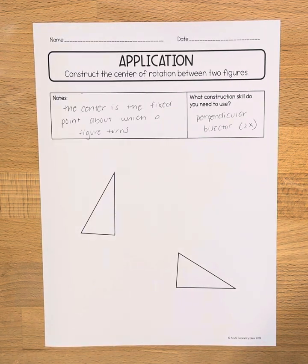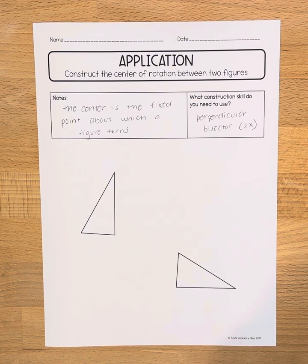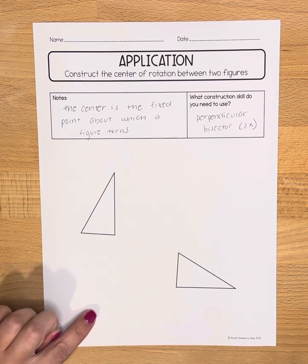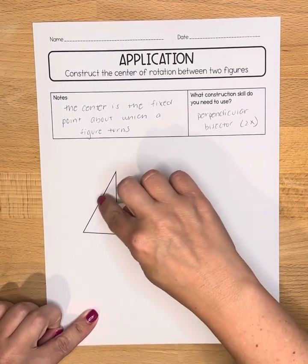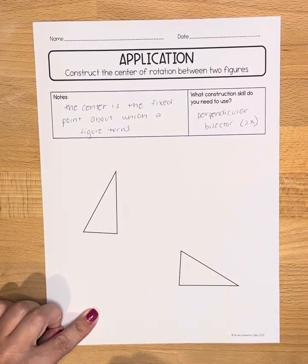In this video, we'll be constructing the center of rotation between two figures. Note that the center of rotation is the fixed point about which a figure turns. So you can almost imagine kind of where my hand is here, that these triangles are rotating around it.